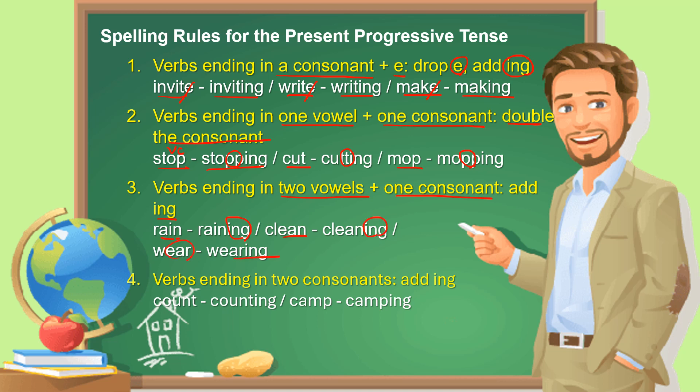Rule 4: verbs ending in two consonants — just add -ing. Count: one, two consonants → counting. Camp: one, two → camping.